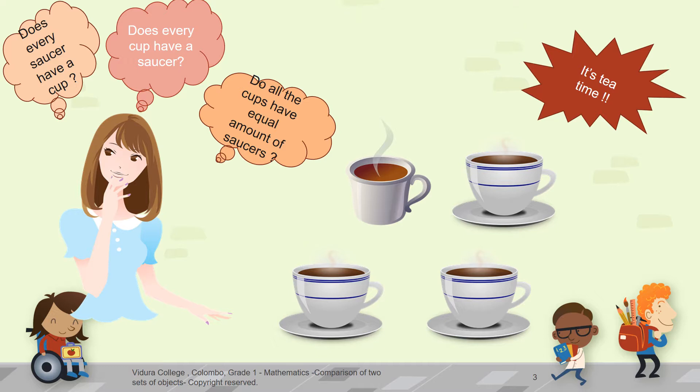She has some visitors in the living room. So she made some tea for them. Oh, there is one saucer missing. Does every saucer have a cup? Does every cup have a saucer? Do all the cups have equal amount of saucers? Shall we count them? There are four cups and three saucers. That means there are more cups than saucers.